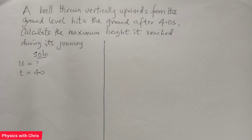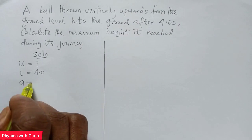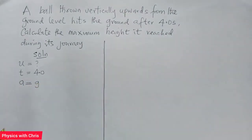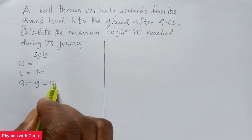We can say that the ball's acceleration is equal to the value of the acceleration due to gravity, that is A is equal to G, which equals 10 meters per second squared.